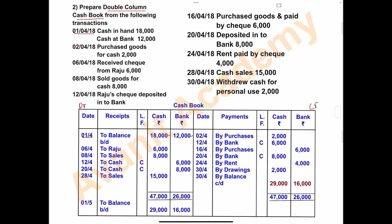The next transaction is on 2nd April 2018: purchased goods for cash rupees 2,000. Purchasing of goods is considered an expense of the business. So on the payment side, write the date 2nd April, 'by purchases', and since these goods are purchased for cash, record rupees 2,000 in the cash column.